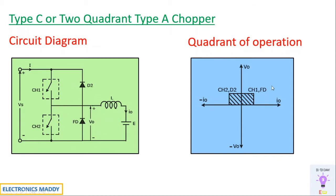As a result, it is operating in both first quadrant and second quadrant. In case you have not watched the videos with respect to type A and type B, please do watch them. It will give you a clear understanding of operation and how to simulate them. With respect to the output voltage, it is always positive with respect to first and second quadrant.